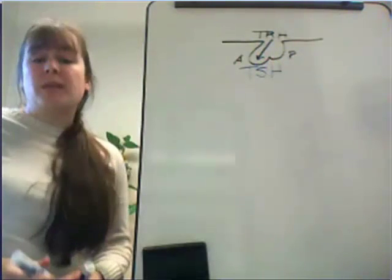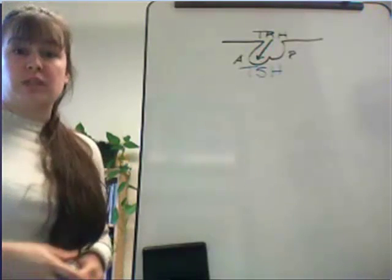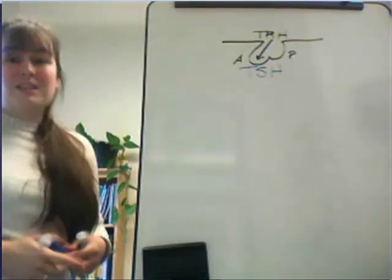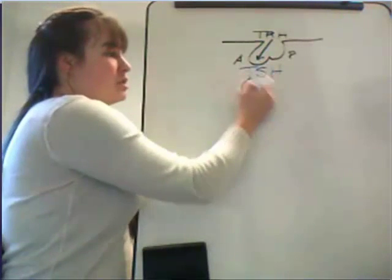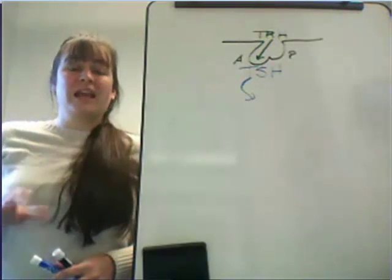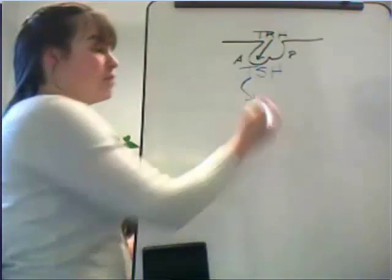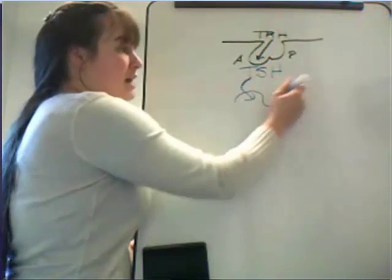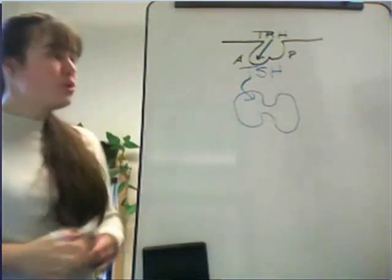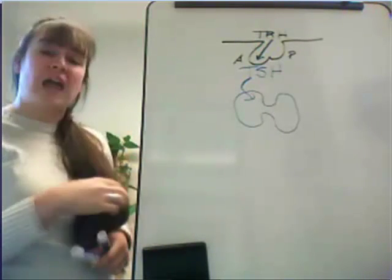TRH is thyrotropin-releasing hormone, and TSH is thyroid-stimulating hormone — the abbreviations commonly used in the anatomy and physiology field. Once thyroid-stimulating hormone is released, it enters into circulation. The gland that is more vascular than any other endocrine gland is the thyroid gland. TSH is targeting the thyroid gland, and the thyroid gland has a substantial supply of blood, making it a very good mechanism for TSH to engage receptors there.